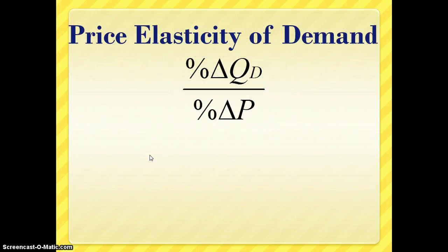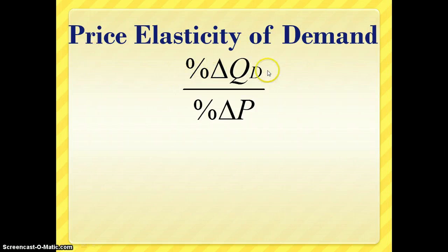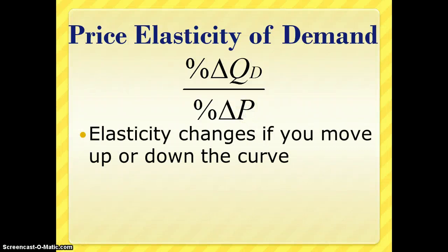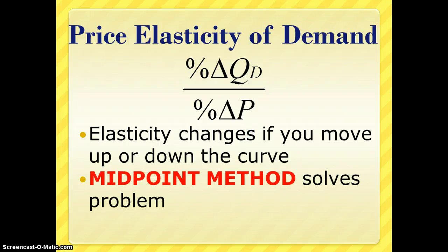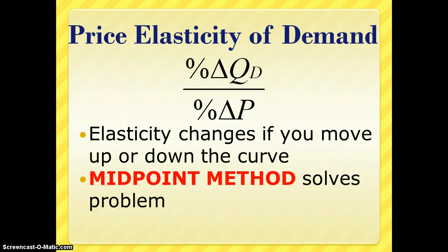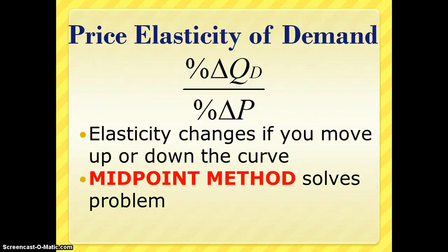When we talk about price elasticity of demand, what we're talking about is the percent change in quantity demanded divided by the percent change in price. We know that mathematically our elasticity will change as we move either up or down the curve, so we use a process known as the midpoint method to determine essentially what the average elasticity is over a range of the demand curve.